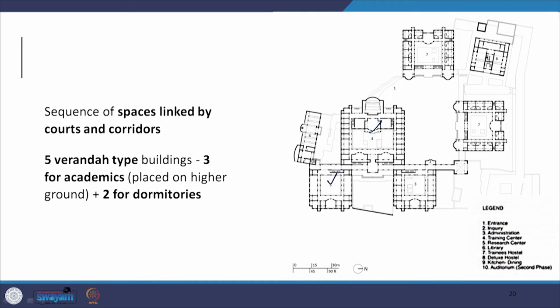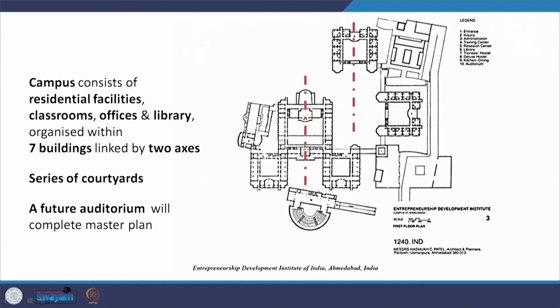There are five pavilion-type buildings here: three academic and two dormitories, with a series of courts created between them and another building planned as a future auditorium. The campus consists of residential facilities, classrooms, offices, and libraries organized within seven buildings linked by two axes. There is also a diagonal — diagonal spaces created, for example in the library and the future auditorium — and I am reminded again of IIM Ahmedabad. These are the sectional elevations of the building.